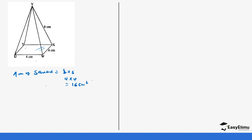The next part we need to calculate is the area of the slanting triangle. These triangles are all equal — that's a good thing with a square-based pyramid. This slant edge is 8 cm and the base of the triangle is 4 cm. To get the triangle's height, we drop a perpendicular bisector at point V, forming a right-angled triangle with a hypotenuse of 8 and a base of 2 (half of 4). We need to find this height value.